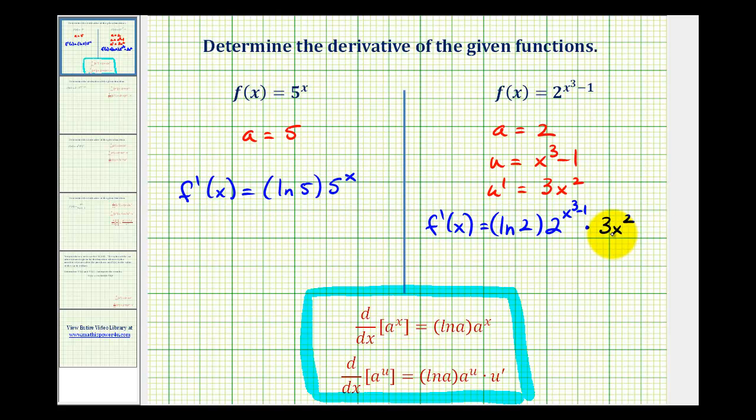So this is our derivative function. Let's go ahead and change the order of this product. F prime of x is going to be equal to 3x squared natural log 2 times 2 to the power of x cubed minus 1.